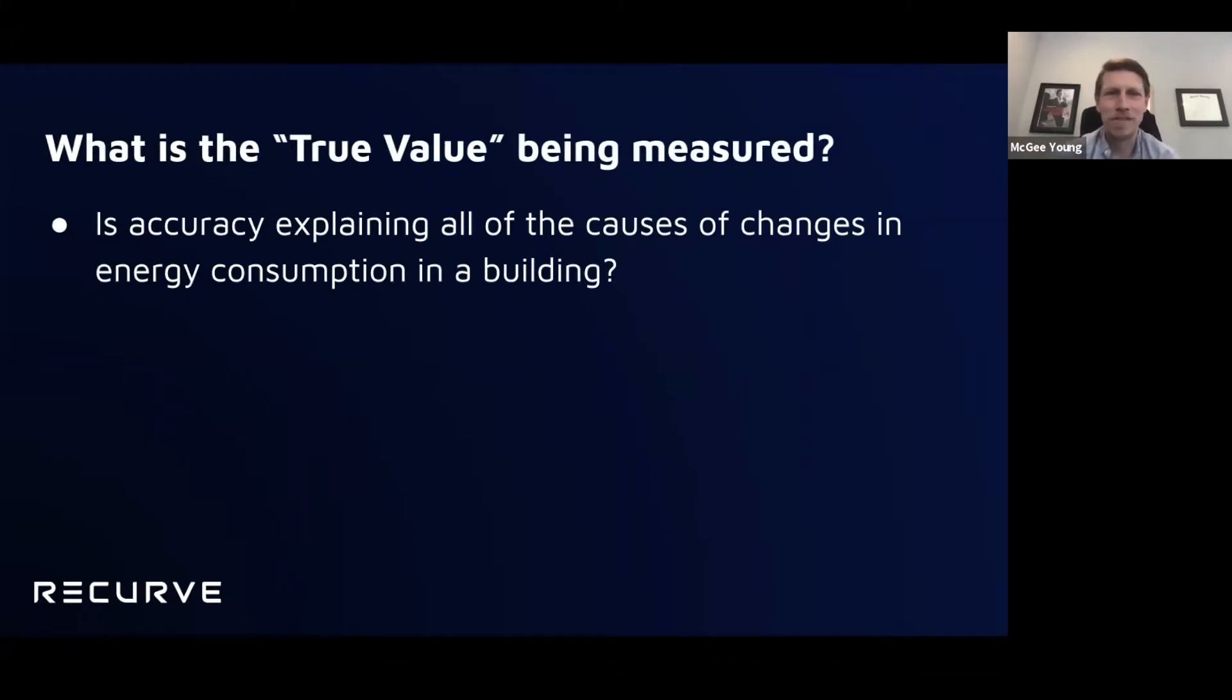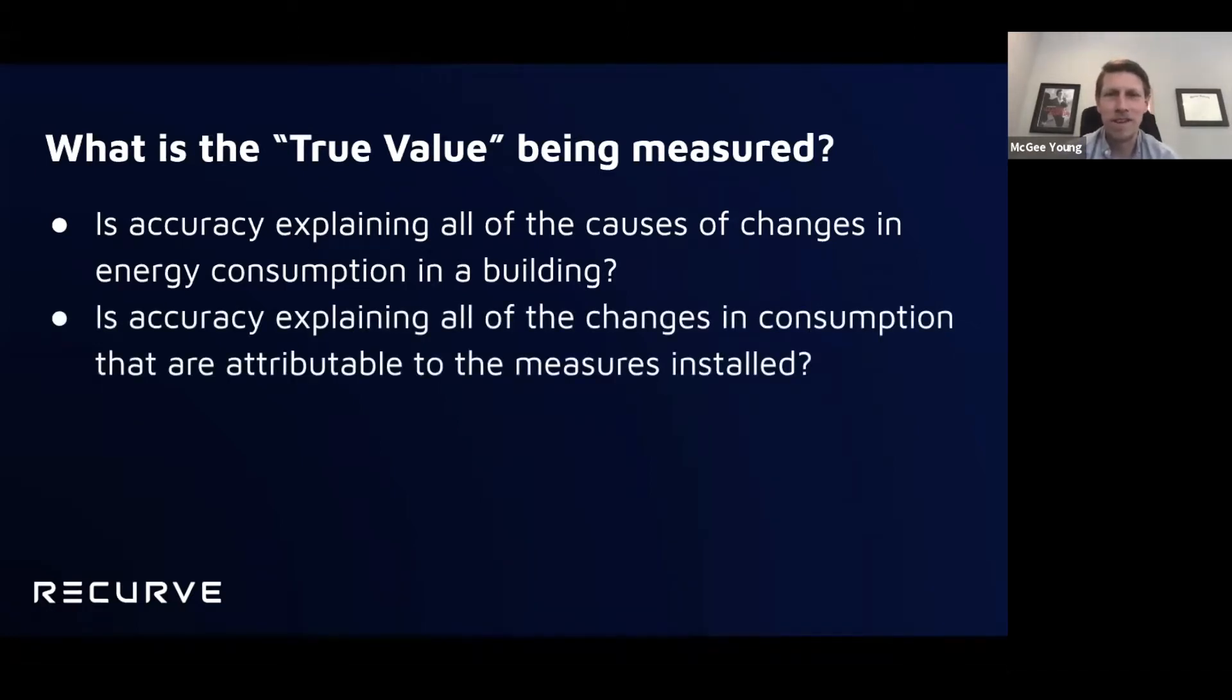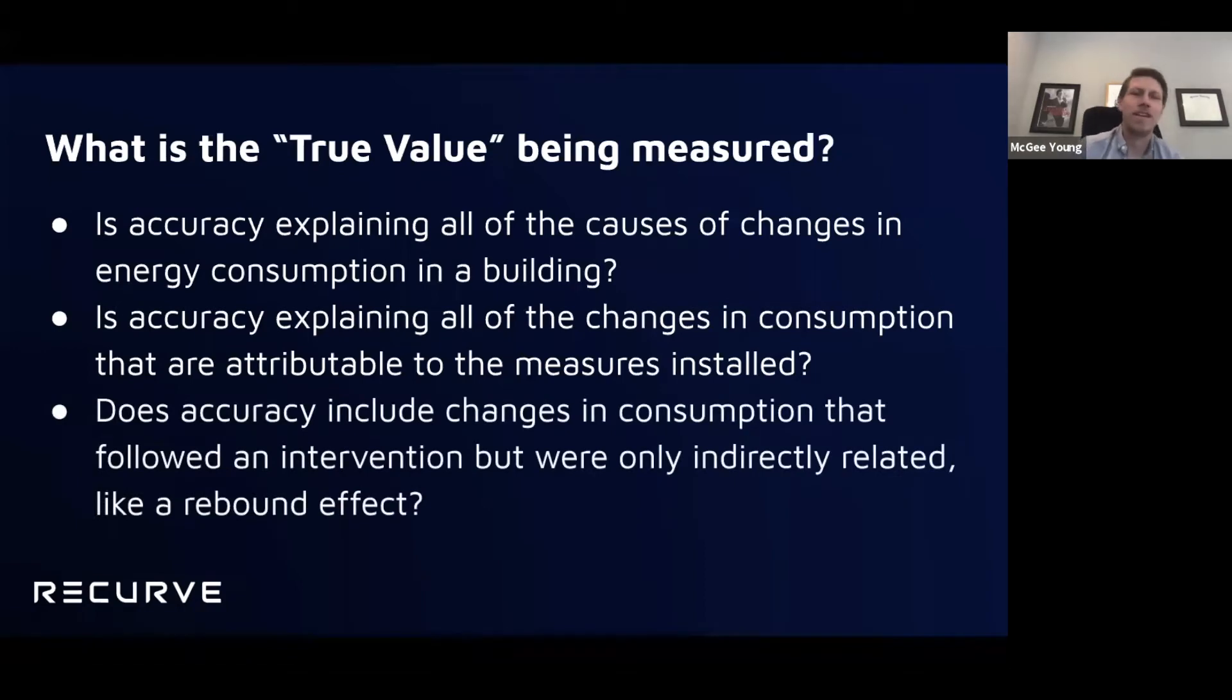They look the same. So they're both, so precision is something that you can actually judge in this case, but accuracy is something that you cannot. All right. So accuracy, given a set of data points, this is straight from Wikipedia. That's how lazy I was. Given a set of data points from repeated measurements of the same quantity, the set can be said to be precise if the values are close to each other. The set can be said to be accurate if their average is close to the true value of the quantity being measured. True value.